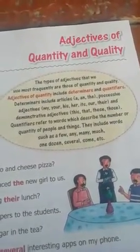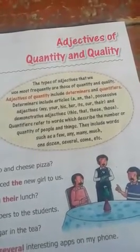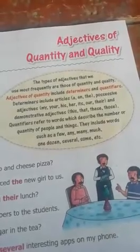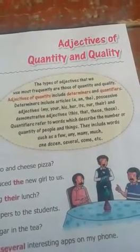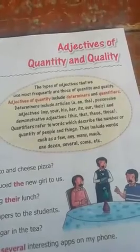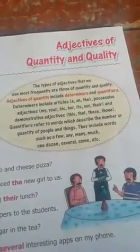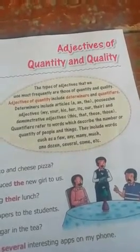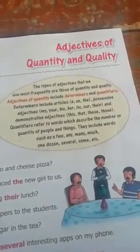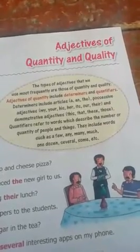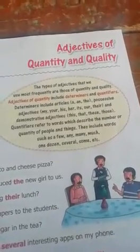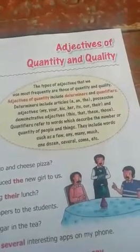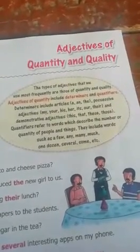The types of adjectives that we use most frequently are those of quantity and quality. Adjectives of quantity include determiners and quantifiers. Determiners include articles — 'a' and 'the' — possessive adjectives: my, your, his, her, its, our, their, and demonstrative adjectives: this, that, these, those.